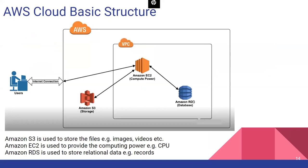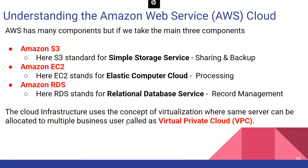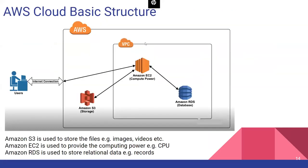To summarize: EC2 is Elastic Compute Cloud, S3 is Simple Storage Service, RDS is Relational Database Service, and VPC is Virtual Private Cloud. Different companies have their own separate VPCs within the shared AWS infrastructure.